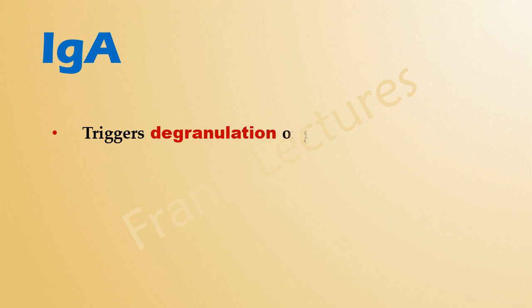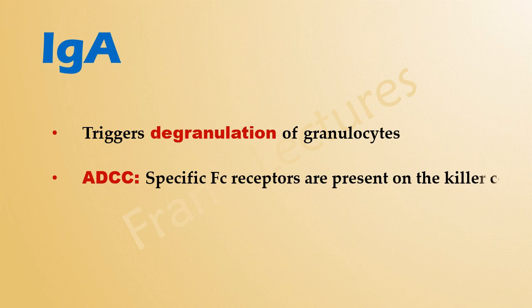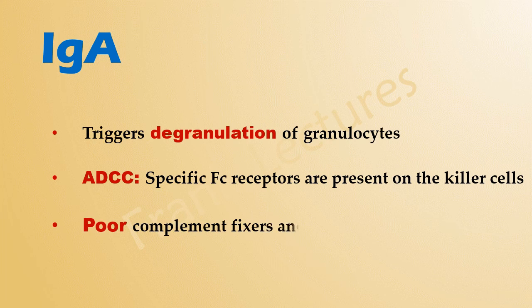Immunoglobulin A triggers degranulation of granulocytes such as neutrophils. It also plays an important role in antibody-dependent cell-mediated cytotoxicity, since IgA binds to specific Fc receptors on killer cells. However, IgA antibodies are poor complement fixers and opsonins.